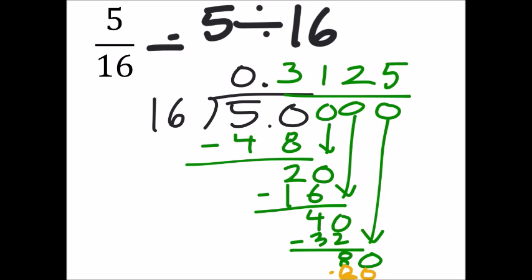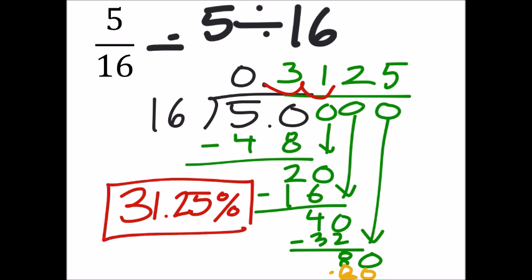Oh, I'm sorry. This is supposed to be a percent. So since this is the decimal, we can either multiply this by 100 or just move it to the right twice. And that would then be 31.25%. We need to remember the label on this as a percent.